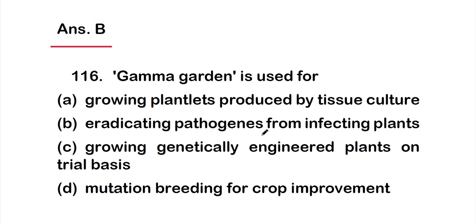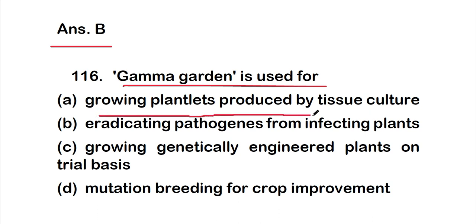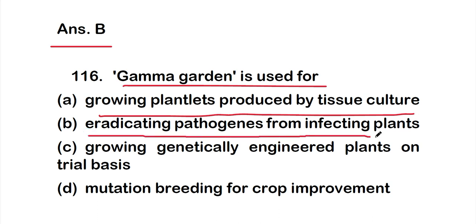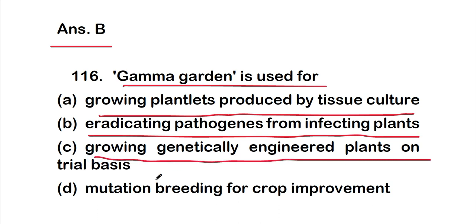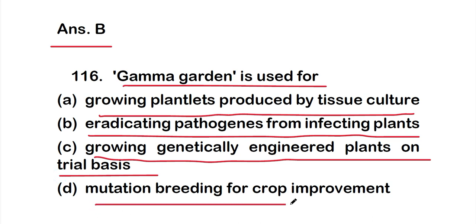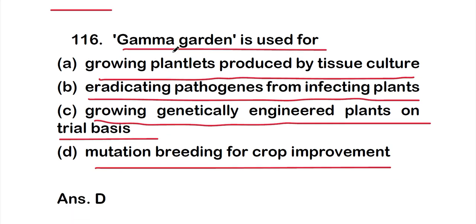Question 116: a gamma garden is used for Option A growing plantlets produced by tissue culture, Option B eradicating pathogens from infecting plants, Option C growing genetically engineered plants on a trial basis, or Option D mutation breeding for crop improvement. The right answer is Option D — a gamma garden is used for mutation breeding for crop improvement.